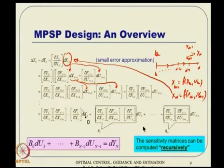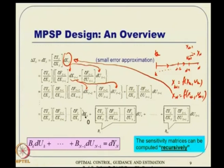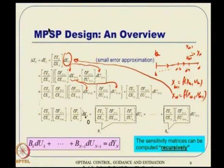That is probably the biggest reason why this is computationally more efficient: we can formulate a static optimization problem. That is why the name 'model predictive static programming' is given — 'programming' stands for optimization, so you can think of it as model predictive static optimization. This constraint equation tells us: we made these errors du_k, du_{k+1}, etc., and hence ended up with this d_y_n, because these are the sensitivity matrices associated with them.